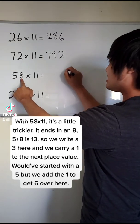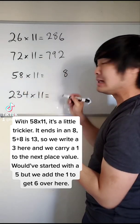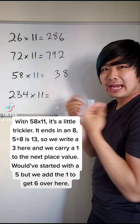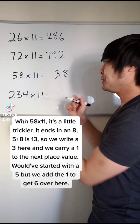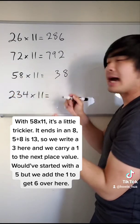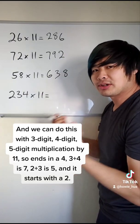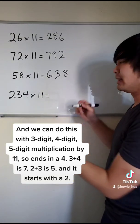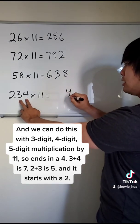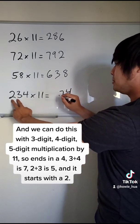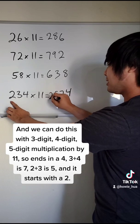With 58 times 11, it's a little trickier. It ends in an 8. 5 plus 8 is 13, so we write a 3 here, and we carry a 1 to the next place value. Would have started with a 5, but we add the 1 to get 6 over here. And we can do this with 3-digit, 4-digit, 5-digit, multiplication by 11. So ends in a 4. 3 plus 4 is 7. 2 plus 3 is 5, and it starts with a 2.